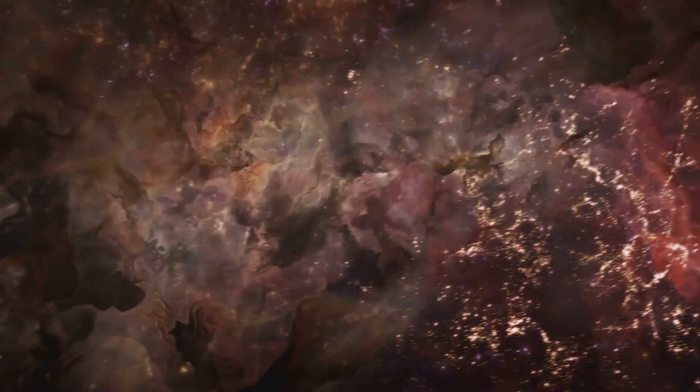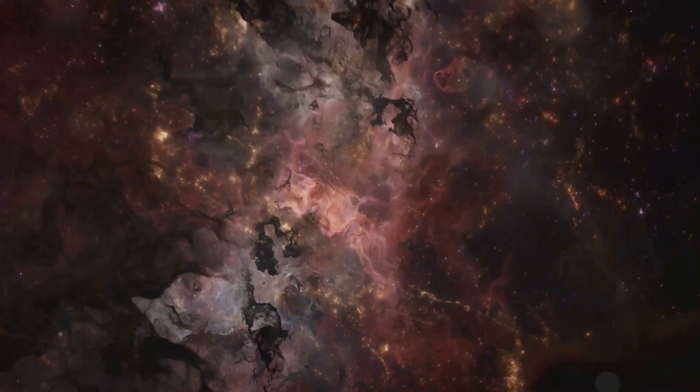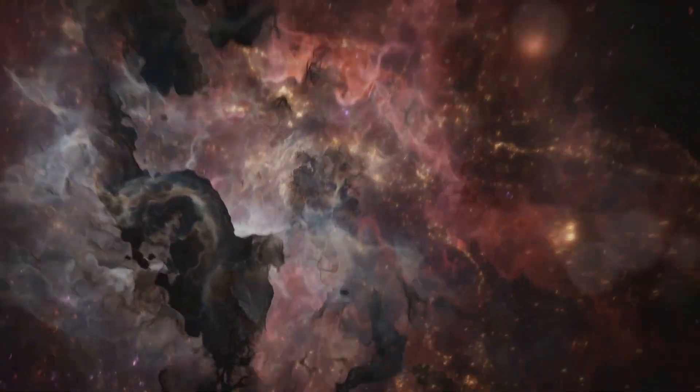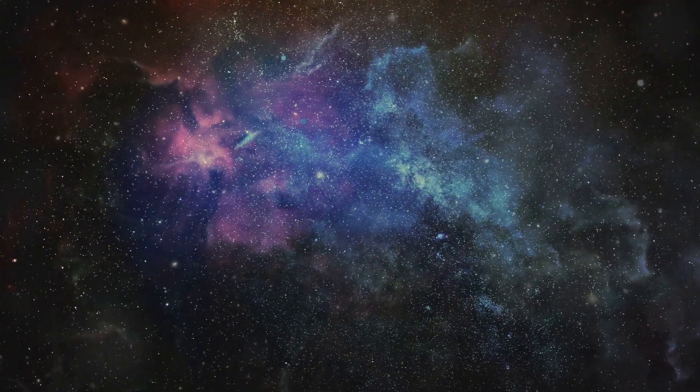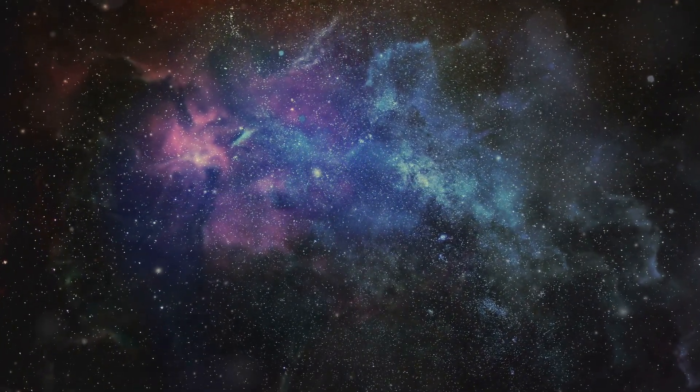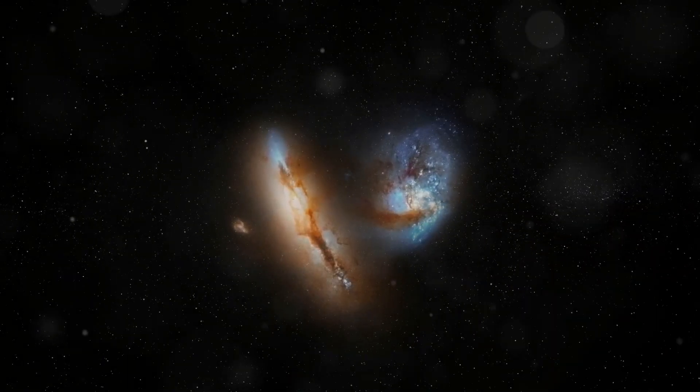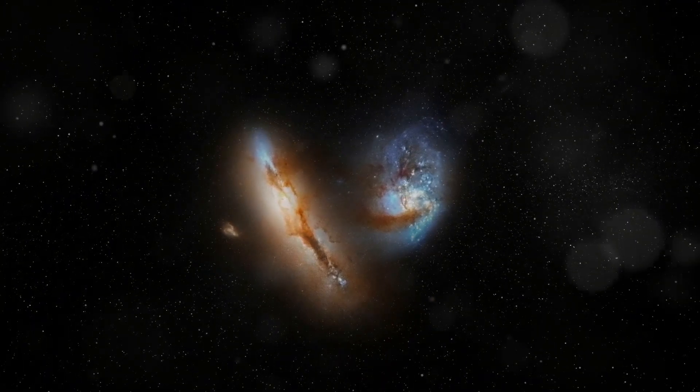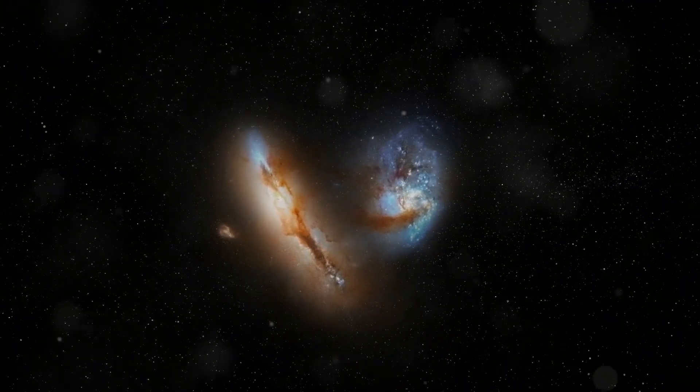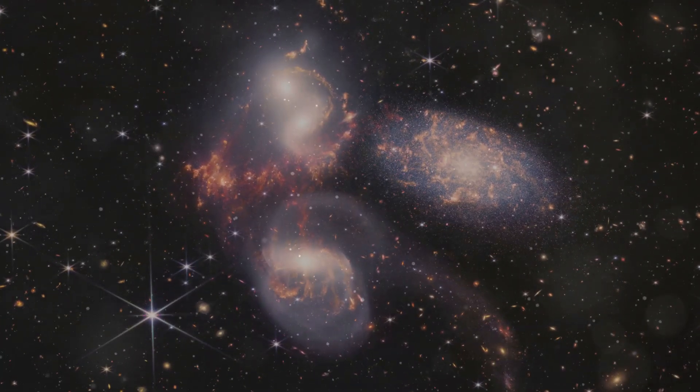Our galaxy, the Milky Way, is hurtling through space at a mind-boggling speed of about 1.3 million miles per hour. Imagine the sheer force required to move such a massive collection of stars, planets, and cosmic dust at such an incredible velocity. They're all being pulled towards a mysterious gravitational anomaly in the direction of the constellations Centaurus and Hydra. This anomaly is so powerful that it has managed to capture the attention of galaxies far and wide, creating a cosmic dance of sorts.